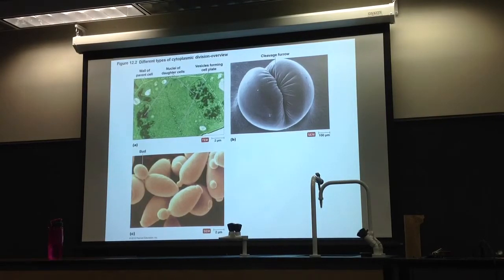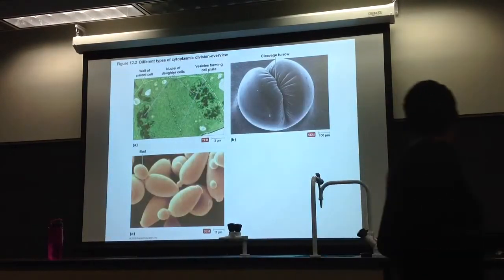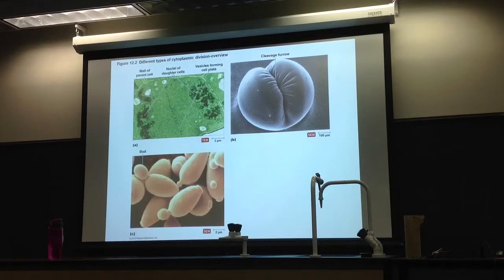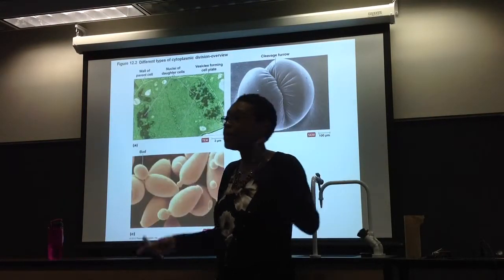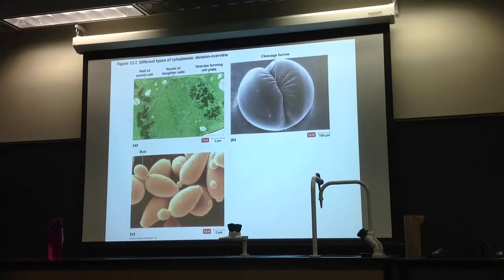So when algae do cytokinesis, they literally have to build a brand new cell wall. In other words, they have the primary cell wall. It's going to form right in there. So vesicles come, they meet in the middle, and these vesicles will contain products for building the cell wall. These vesicles will just fuse together, and over time, you just literally build from scratch a new cell wall. This is why plant cells and some algae, when you look at plants under the microscope, they're all next door to each other, like blocks. When they divide, they just build a new cell wall.